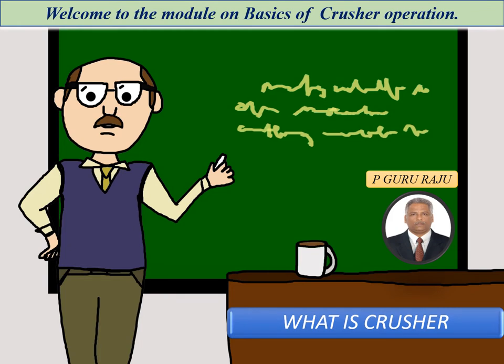Welcome to the module on basics of crusher operation. Crushers are generally used to produce aggregate which can be further used in concrete, wet mix macadam, and asphalt materials. In order to make sure the aggregates produced meet the requirements for wet mix macadam or asphalt layers like DBM or BC, certain precautions are necessary. In this module we will talk about the basics of crushers as part one, and in upcoming modules we will get into producing aggregate for concrete, GSB, and asphalt materials.